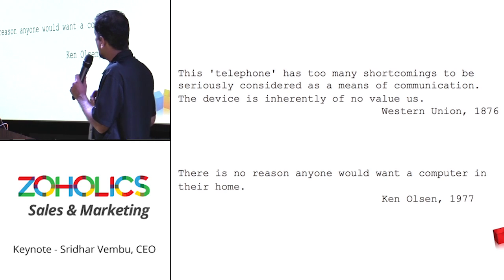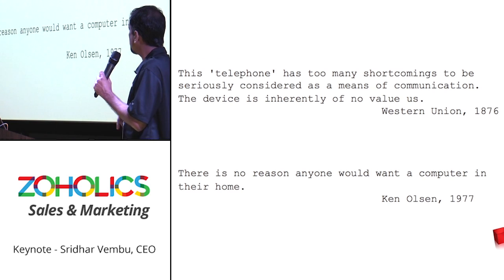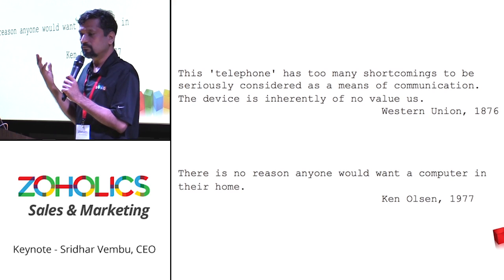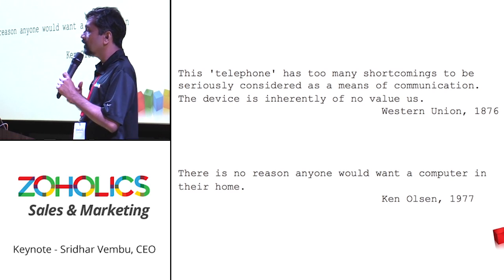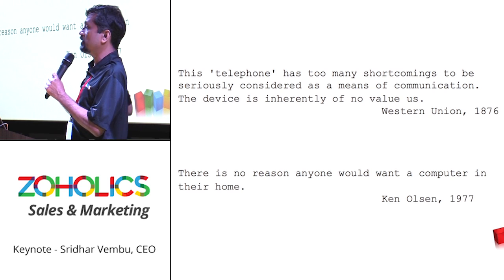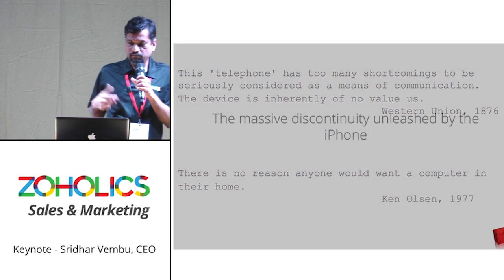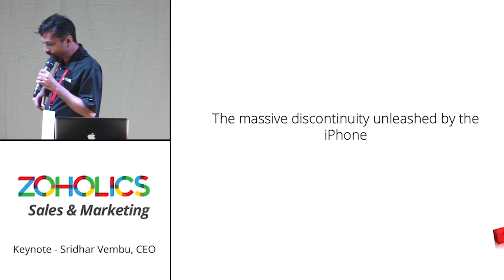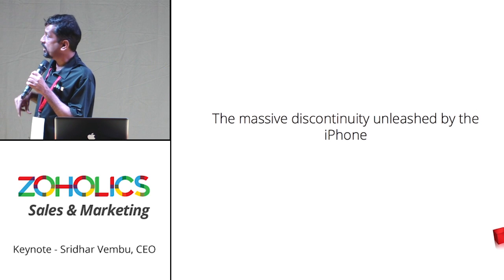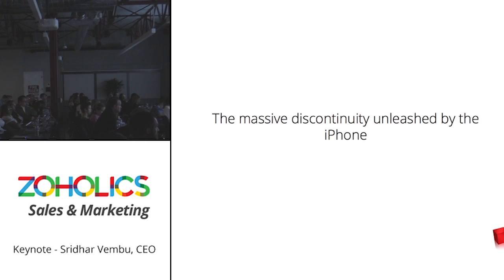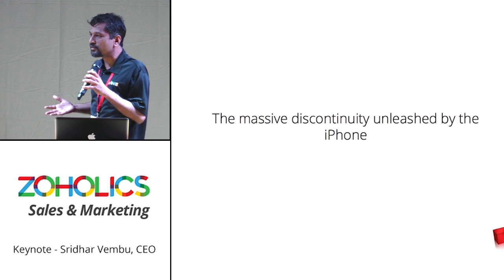Here are some quotes from 1876 — you can read it — Western Union dismissing the telephone. And in 1977, Ken Olsen, the founder of Digital Equipment, dismissing the PC. These discontinuities were happening as these people were observing them. Closer to our time, about seven years ago, the iPhone happened. Unfortunately, that's most of us — when something momentous happens, we tend not to recognize it. That's how discontinuity happens in our business.